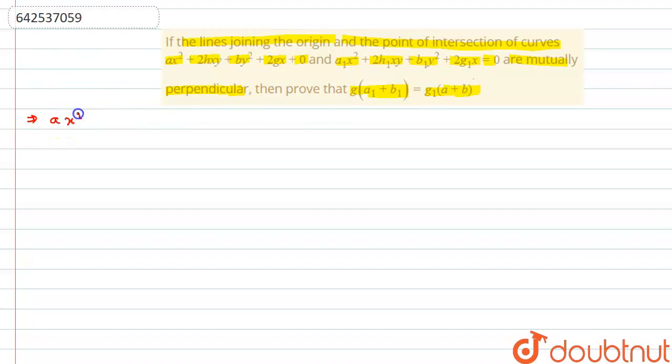ax² plus 2hxy plus by² plus 2gx equal to 0 and the other line is a1x² plus 2h1xy plus b1y² plus 2g1x equal to 0. These are the two lines and we have to find the point of intersection and the line joining origin and the point of intersection of these two equations.